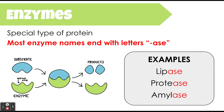Protease again ends in A-S-E, so we know it's an enzyme. The beginning 'prote' looks a lot like protein, so that would be an enzyme that works on proteins. Amylase — the beginning doesn't look like much, but we know it's an enzyme, and it's specifically an enzyme that works on carbohydrates.